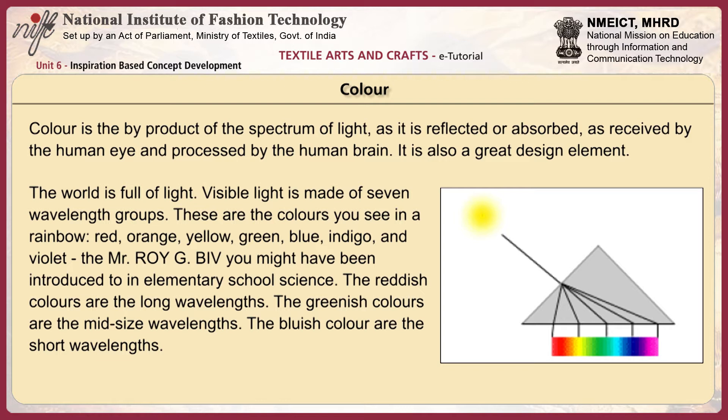The world is full of light. Visible light is made of seven wavelength groups — these are the colors you see in a rainbow: red, orange, yellow, green, blue, indigo and violet — the mnemonic Roy G. Biv you might have been introduced to in elementary school science.